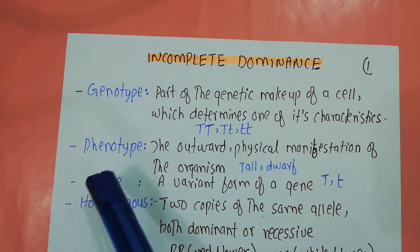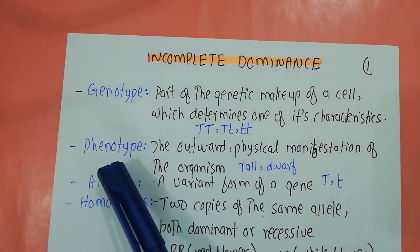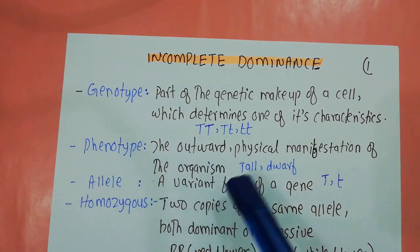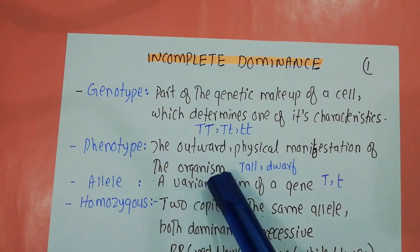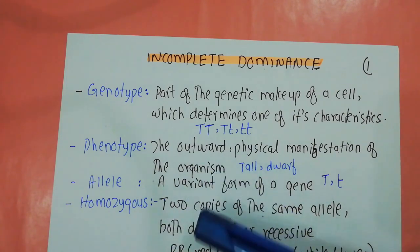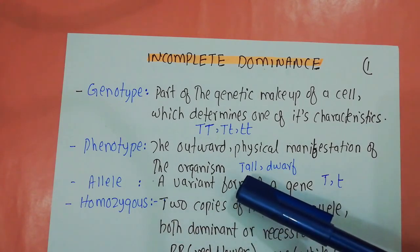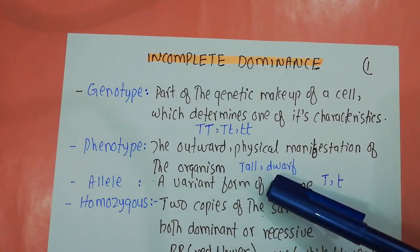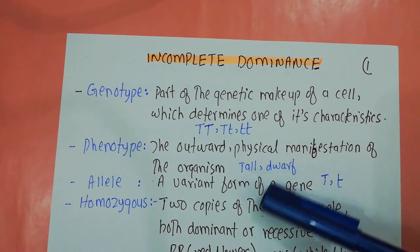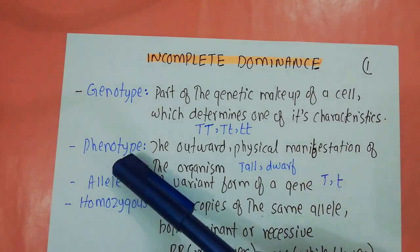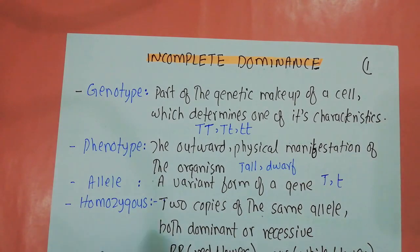Another important term is the phenotype. The phenotype is actually the outward physical manifestation of the organism — how that particular characteristic looks with the naked eye. For example, you can actually see a tall pea plant or you can see a dwarf pea plant. So the outward physical manifestation of the organism is known as the phenotype.